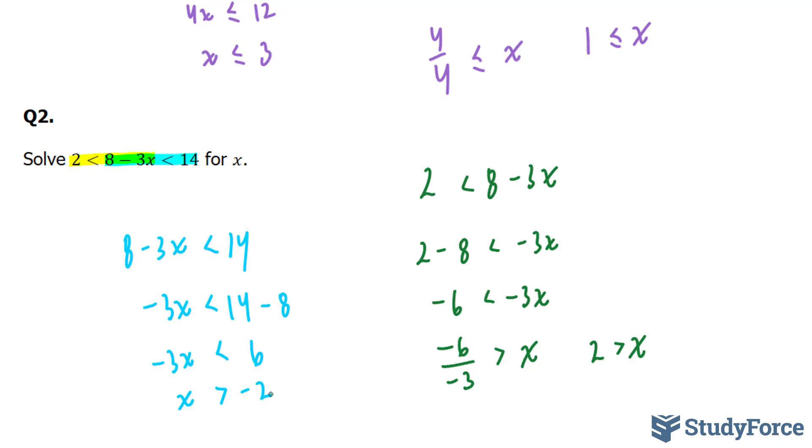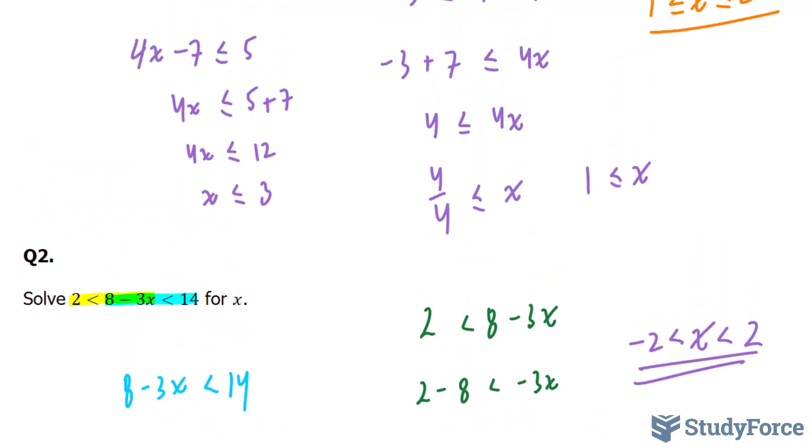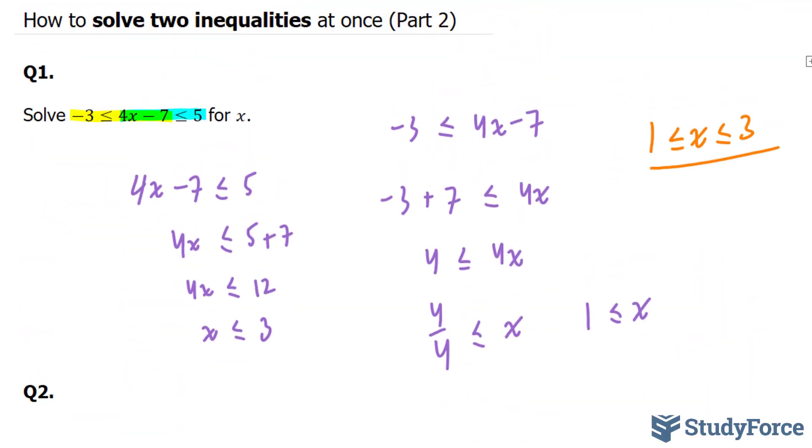Therefore, our final answer must be written like this: x must be greater than -2 and less than positive 2. That is your final answer. So there you have it. Two examples on how to solve two inequalities at once.